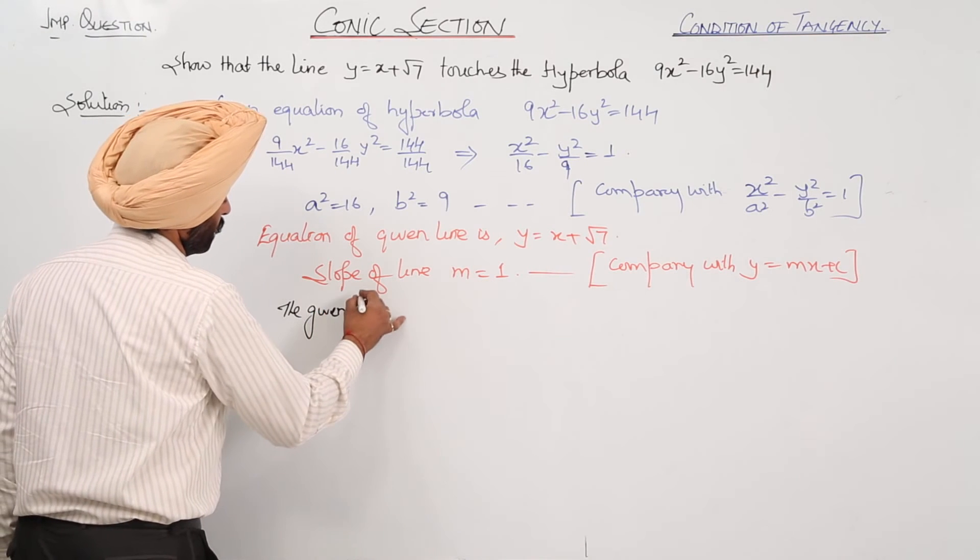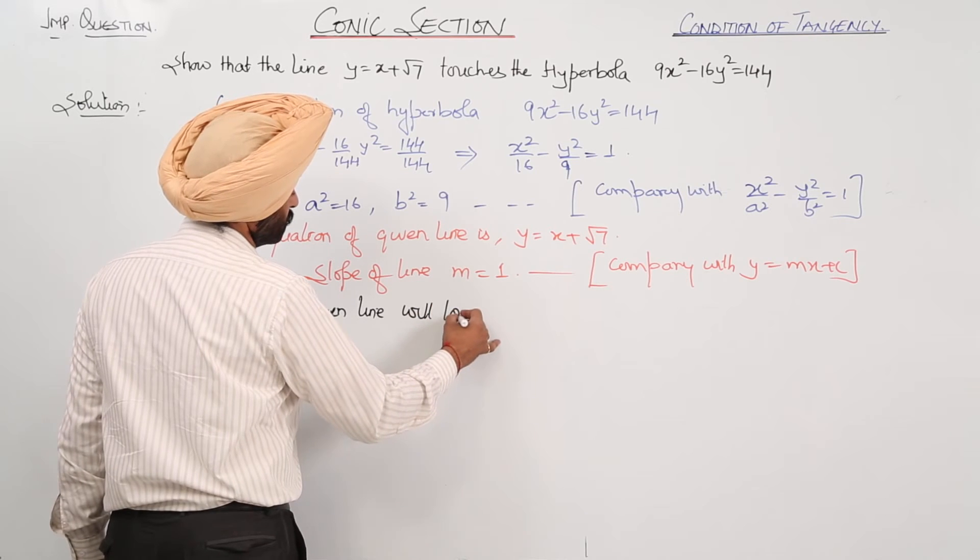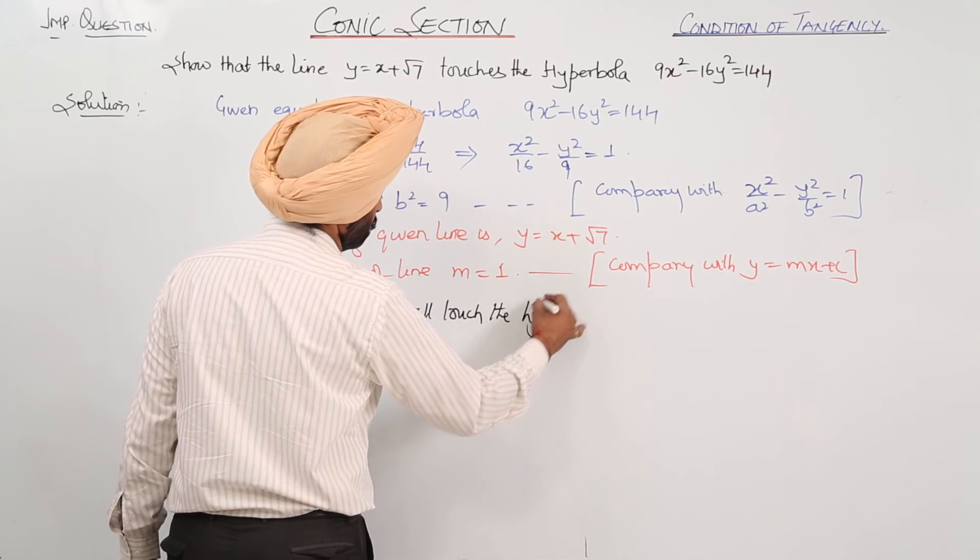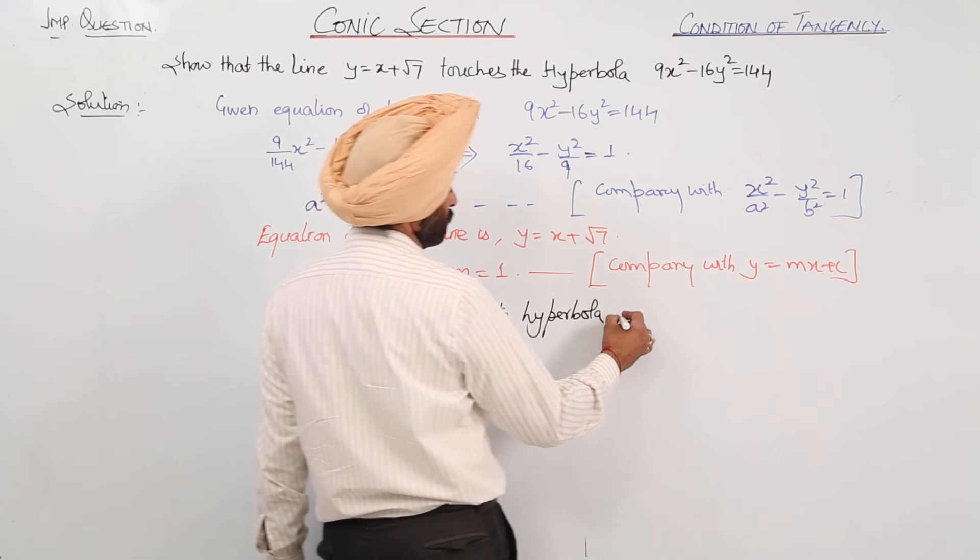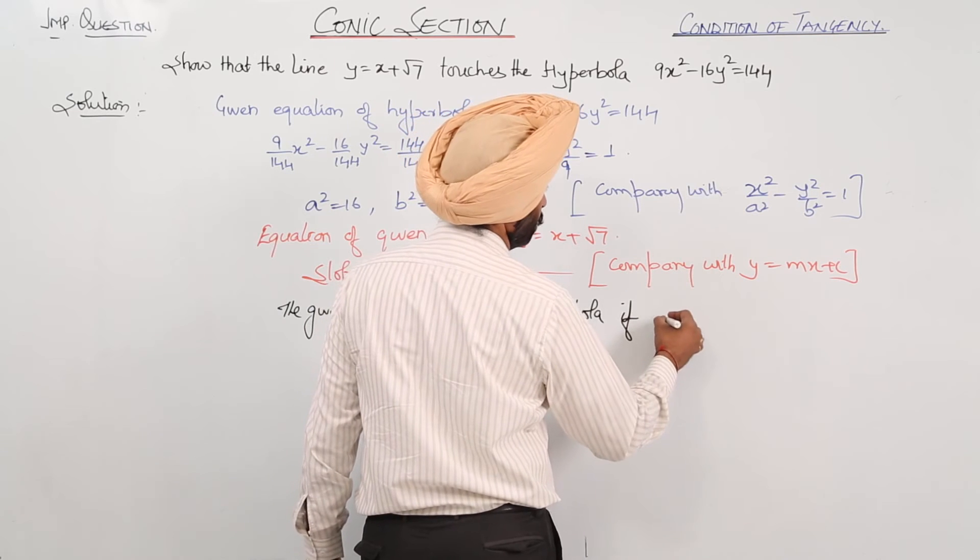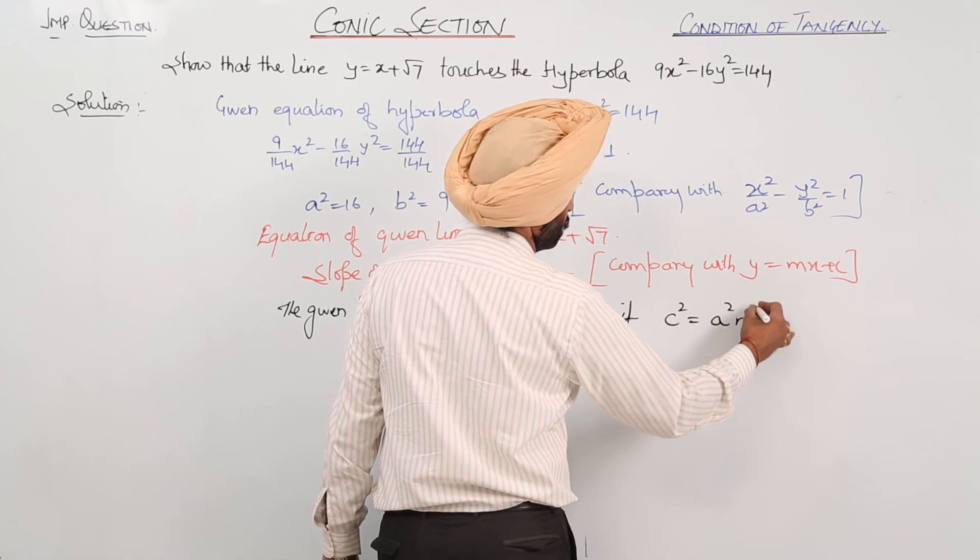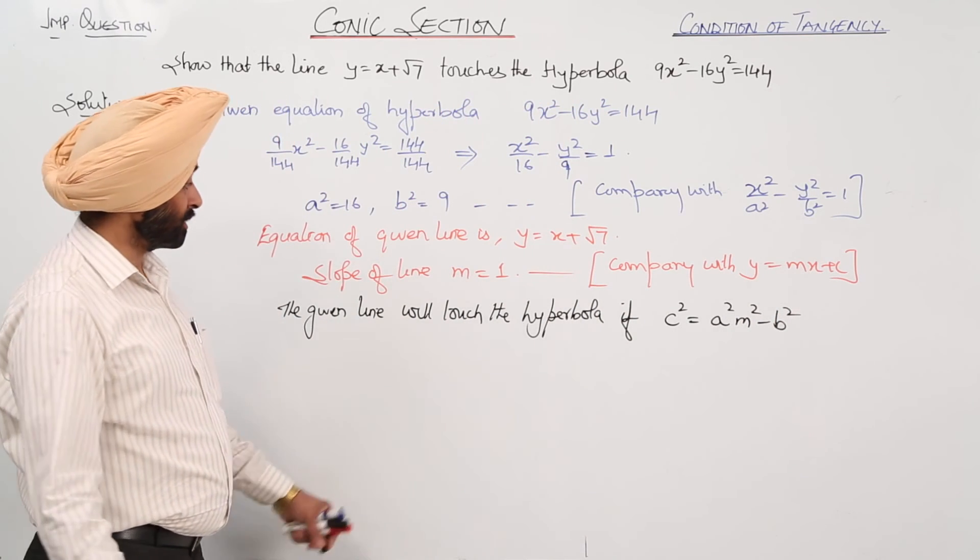The given line will touch the hyperbola if c square equals a square m square minus b square. This is the condition.